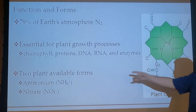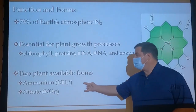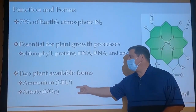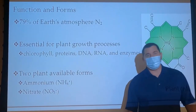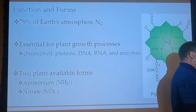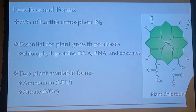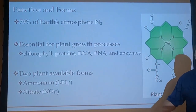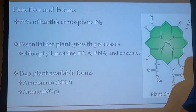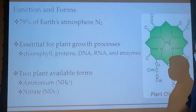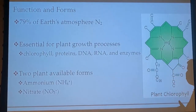It's important to know the two plant-available forms: ammonium and nitrate. If nitrogen is not in these two plant-available forms, there must be some conversion or transformation that allows our plants to be able to take it up.